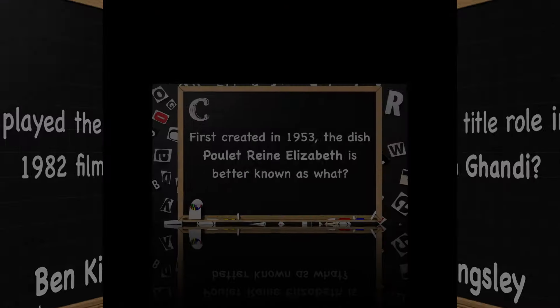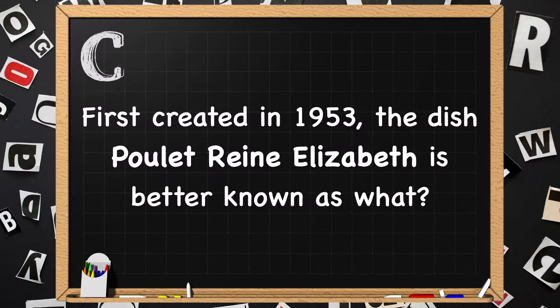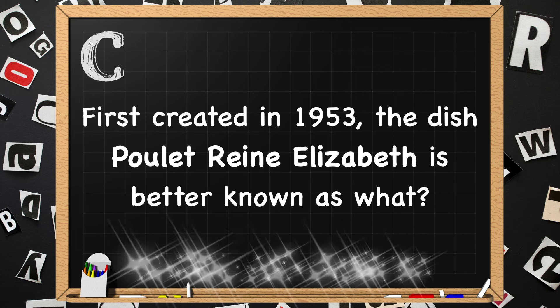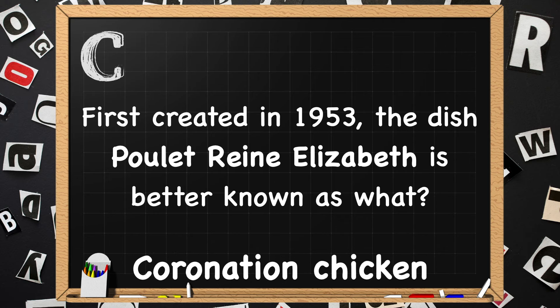Beginning with C. First created in 1953, the dish Poulet Grain Elizabeth is better known as what? It's better known as Coronation Chicken.